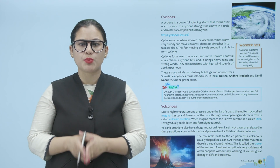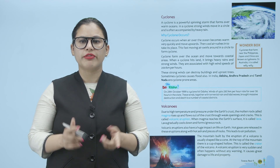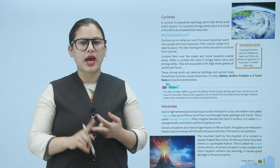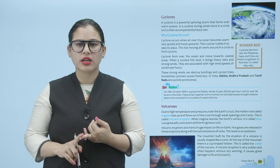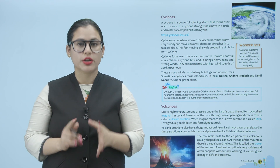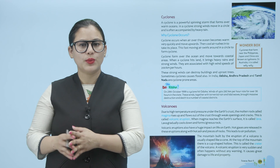Wonder box: cyclones that form near the Philippines, Japan and China are known as typhoons. In Australia, a cyclone is called a willy-willy. Cyclones jo Philippines, Japan ya China mein aate hain unhe typhoons kehte hain, aur jo Australia mein aate hain unhe willy-willy kehte hain.